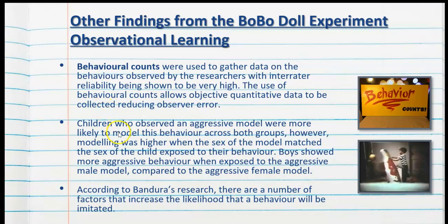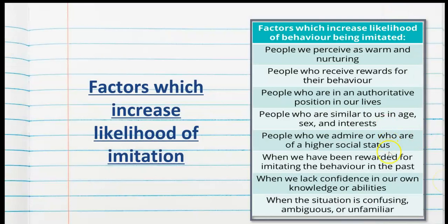According to Bandura's research, there are a number of factors that increase the likelihood that a behaviour will be imitated. We are more likely to imitate people we perceive as warm and nurturing, people who receive rewards for their behaviour, people who are in an authoritative position in our lives, people who are similar to us in age, sex and interests, people who we admire or who are of a higher social status, when we have been rewarded for imitating the behaviour in the past, when we lack confidence in our own knowledge or abilities, and when the situation is confusing, ambiguous or unfamiliar.